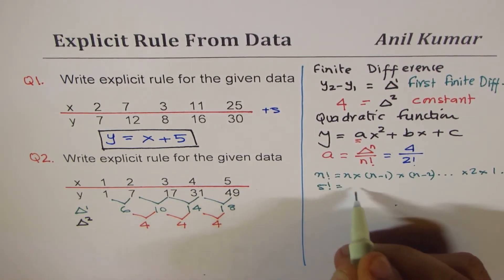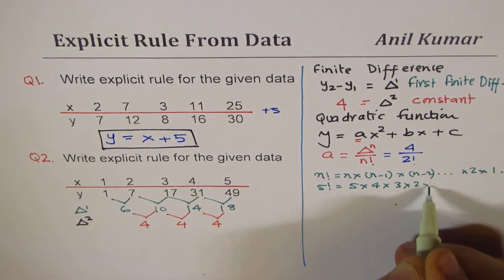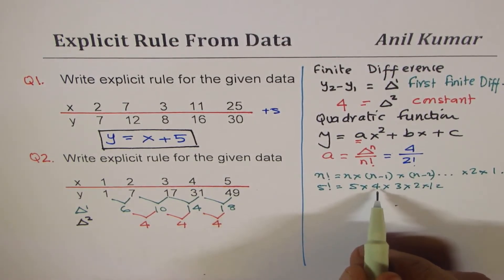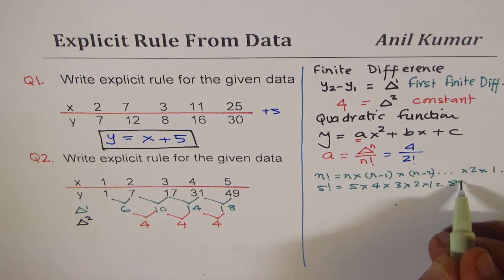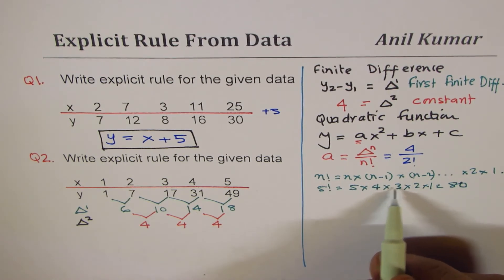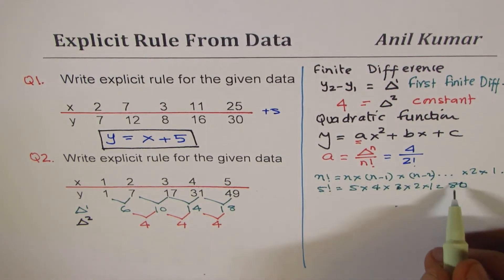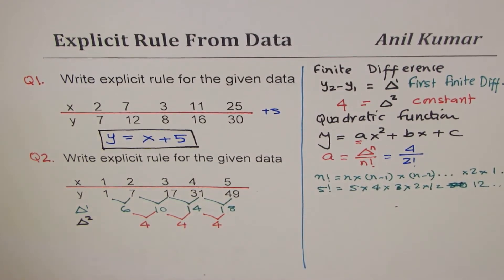5 times 4 is 20, 20 times 3 is 60, 60 times 2 is 120. So likewise you can calculate the factorial, but 2 factorial is just 2.